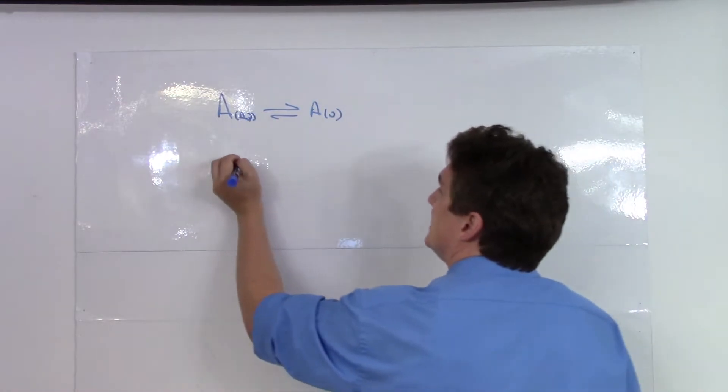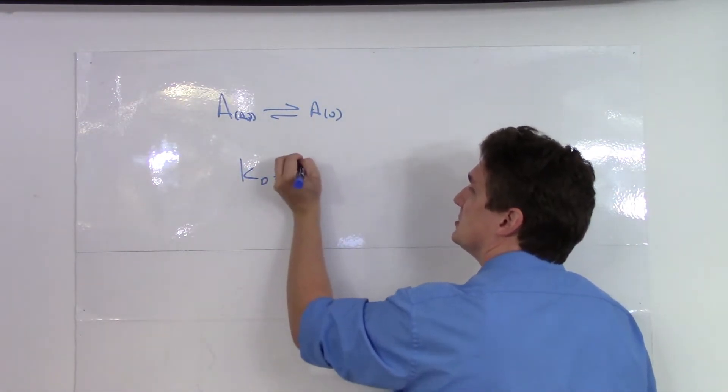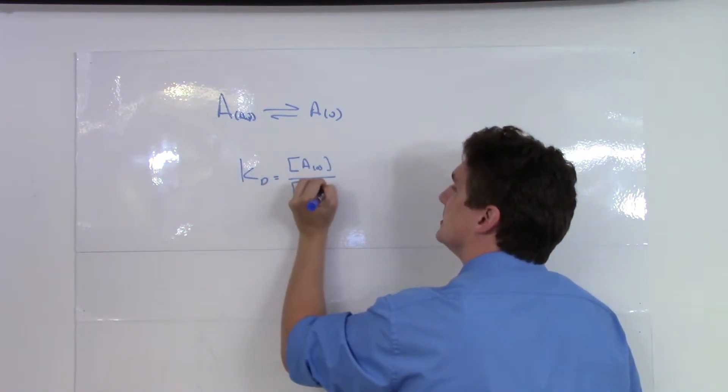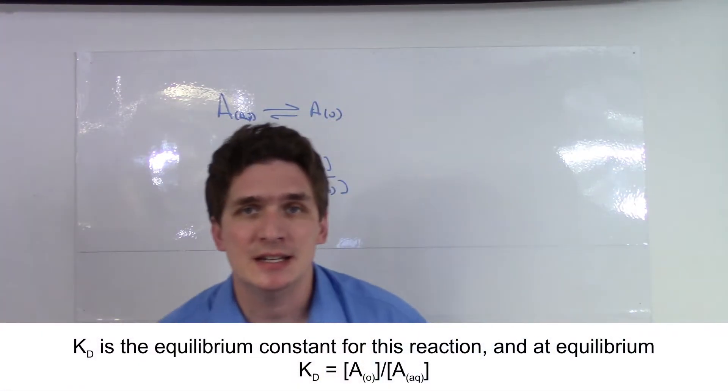In this case, it's going to be KD. So KD is the concentration of A in the organic phase divided by the concentration of A in the aqueous phase. And this is formally how KD is defined.